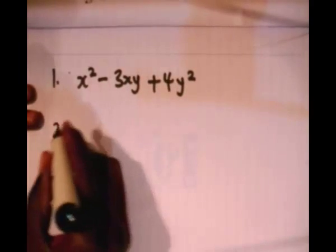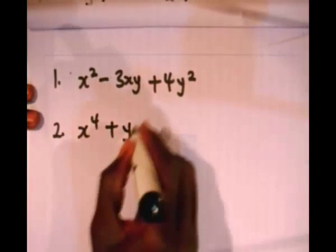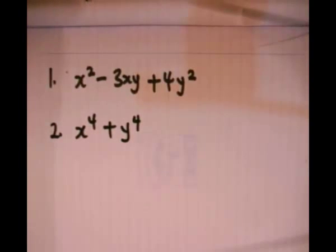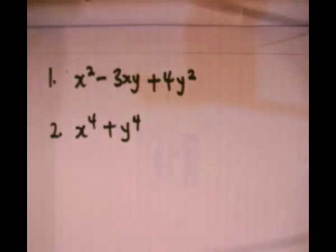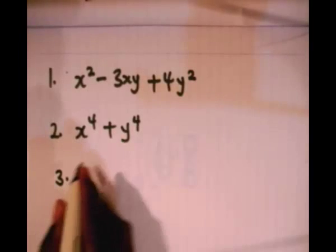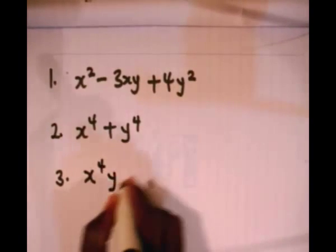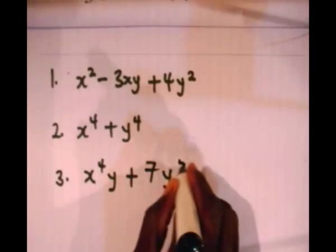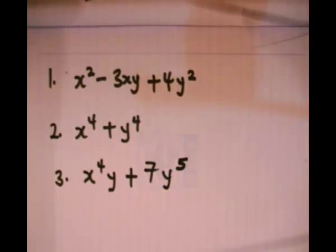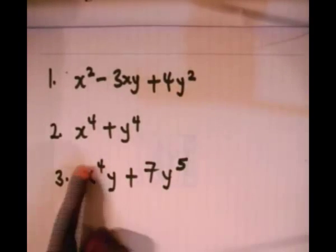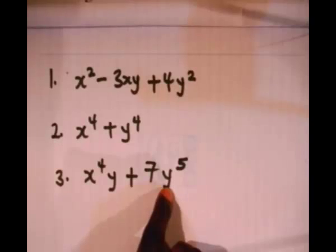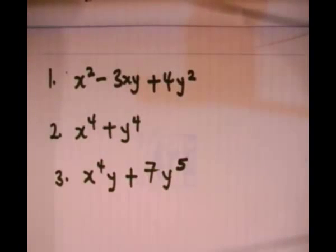Another example: x to the power of 4 plus y to the power of 4. Is this homogeneous? Yes — because this term is of degree 4 and this term is also of degree 4, so this is a homogeneous polynomial. A third example: x⁴y plus 7y⁵. The degree of the first term is 4+1=5, and the degree of the second term is also 5. So this is also a homogeneous polynomial.